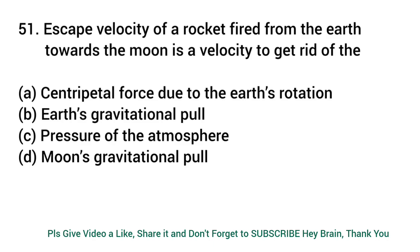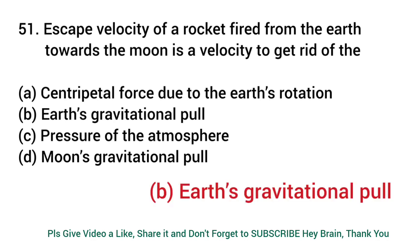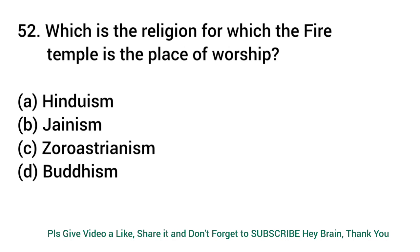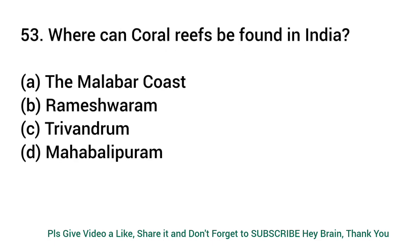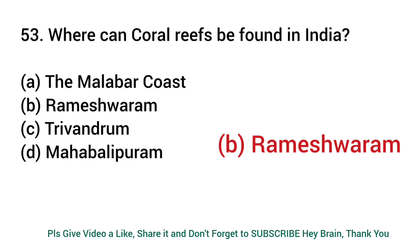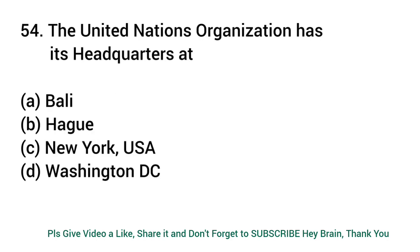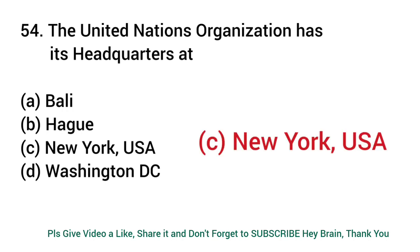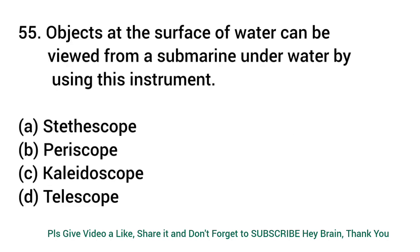Escape velocity of a rocket fired from the Earth towards the Moon is a velocity to get rid of the? Answer: Earth's gravitational pull. The fire temple is the place of worship of which religion? Answer: Zoroastrianism. Where can coral reefs be found in India? Answer: Rameshwaram. The United Nations Organization has its headquarters at? Answer: New York, USA. Objects at the surface of water can be viewed from a submarine underwater by using which instrument? Answer: Periscope.